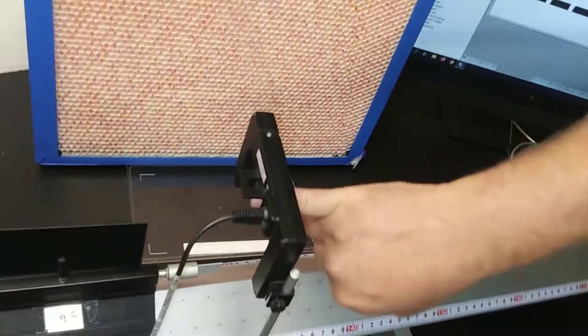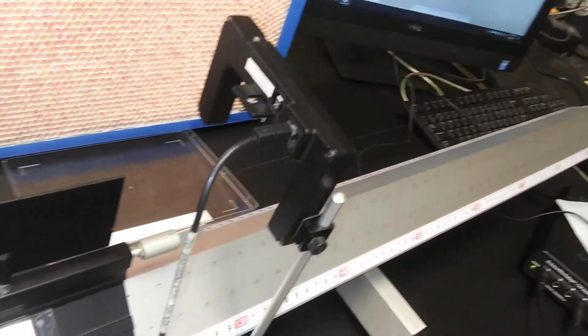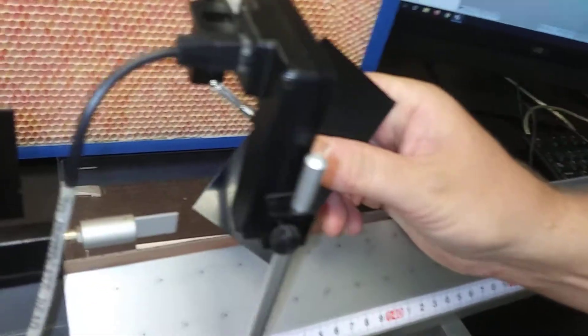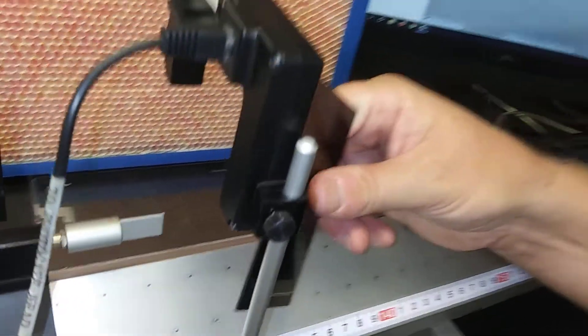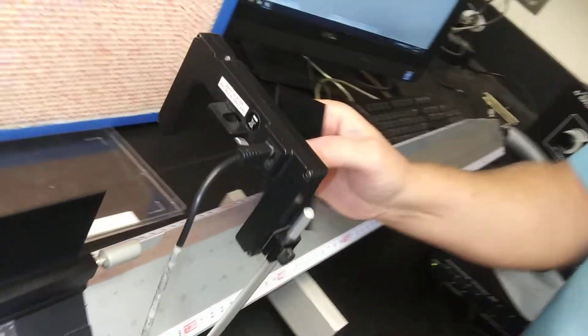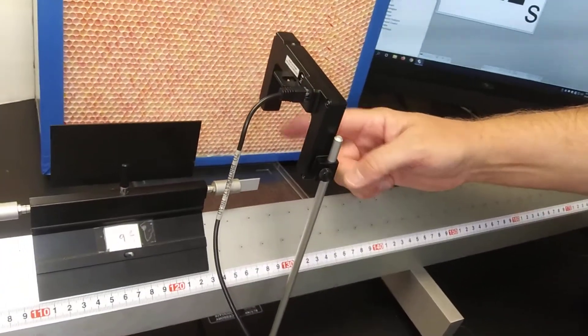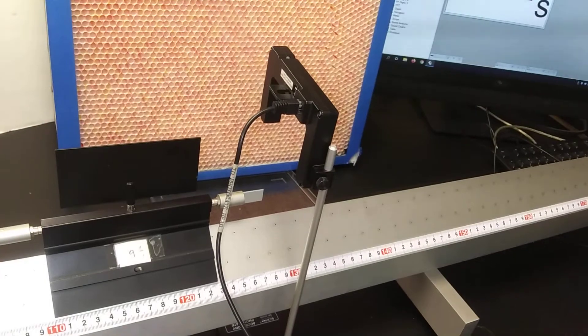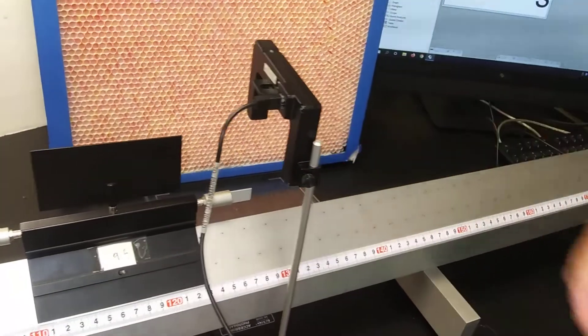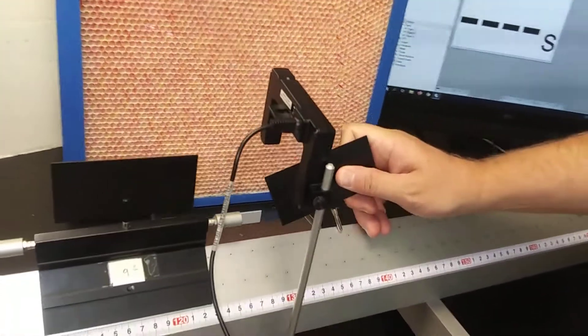The idea is, if you look very closely inside of here, we'll use this as a pointer. Right there, there's a hole, and there's another hole over here on this other side. The idea is there's an infrared sensor shining in there. You might even be able to see it if you shine right on the axis, but I don't remember which side.